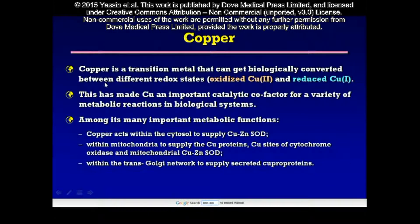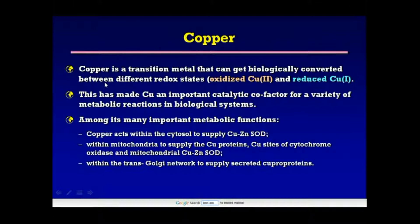Copper is a transition metal that can be biologically converted between different redox states: oxidized Copper II and reduced Copper I. This has made copper an important catalytic cofactor for a variety of metabolic reactions in biological systems. Among its many important metabolic functions, copper acts within the cytosol to supply the copper-zinc superoxide dismutase, within the mitochondria to supply the copper proteins and the copper sites of cytochrome oxidase, and the mitochondrial copper-zinc superoxide dismutase enzyme, and within the trans-Golgi network to supply secreted copper proteins.